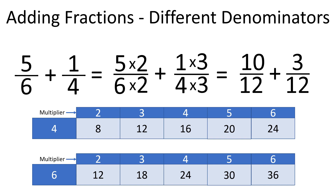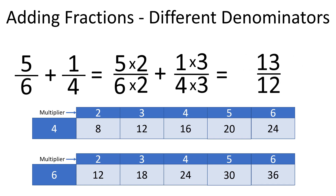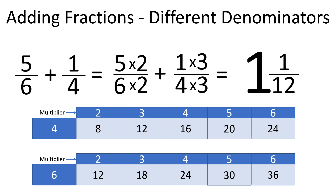Now we have fractions with the same denominators, and we can add them by adding numerators only. Ten plus three is thirteen, and the denominators stay the same. Thus, five-sixths plus one-fourth is thirteen-twelfths, or one and one-twelfth.